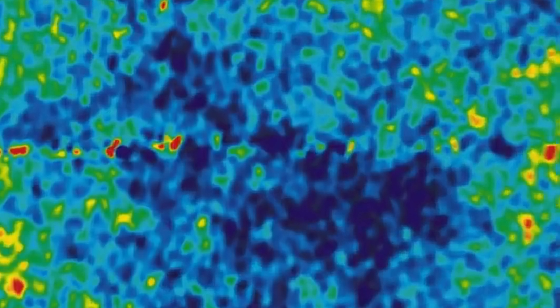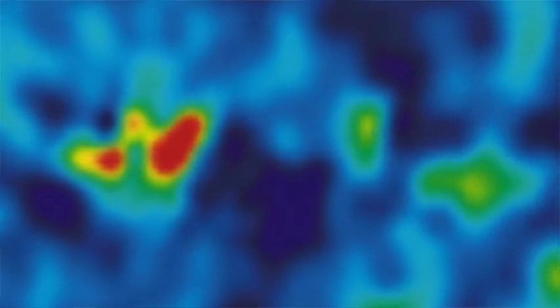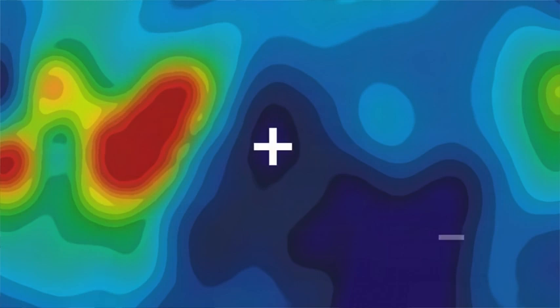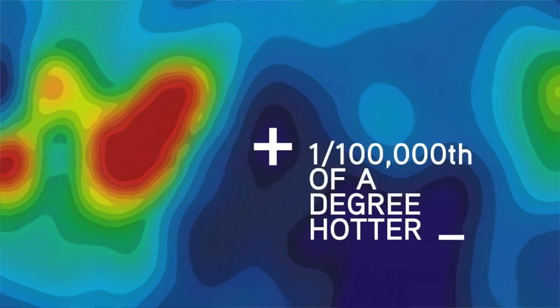Recent studies of the cosmic background radiation using special satellites such as the WMAP satellite have shown that in fact there were tiny differences in the temperature of the cosmic background radiation. Some regions, for example, were just a thousandth of a degree hotter than other regions. Now this was just enough for gravity to get to work, and what gravity could do was magnify those differences and turn them into something much more interesting.